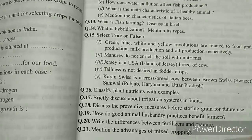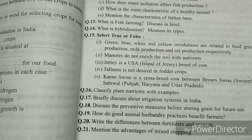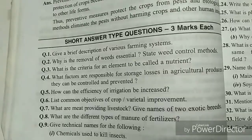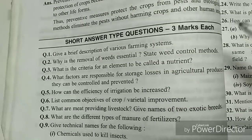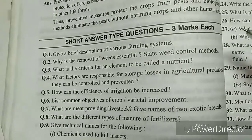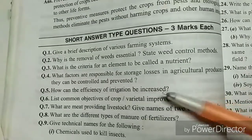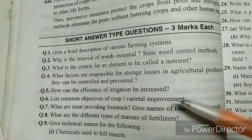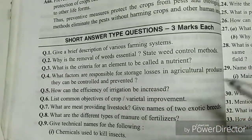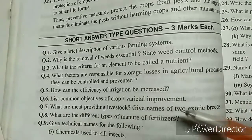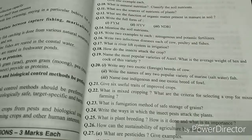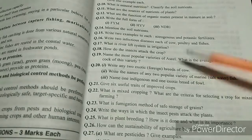The most important question is the advantages of mixed cropping — these are generally asked in the exam, so be clear with all the advantages. Now let's discuss some three-mark important questions. The 6th question on common objectives of crop or varietal improvement is very very important.